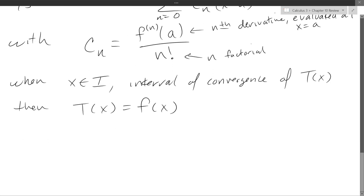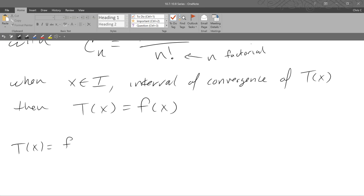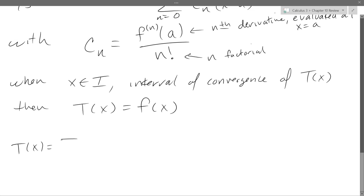Let's do an example and write out what the Taylor series actually looks like. The fully expanded form is a little ugly, but I'll write it out. With the summation: the nth derivative of f at a divided by n factorial, multiplied by x minus a to the n power, n from 0 to infinity.